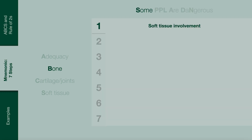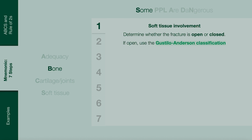Soft tissue involvement. It is important to assess the soft tissue in relation to the fracture by commenting on whether the fracture is open or closed. Open fractures are fractures that communicate with the external environment due to a breach in the skin barrier. They are an orthopedic emergency and must be referred. If the fracture is open, use the Castilla-Anderson classification, which will help you determine your antibiotic choice.